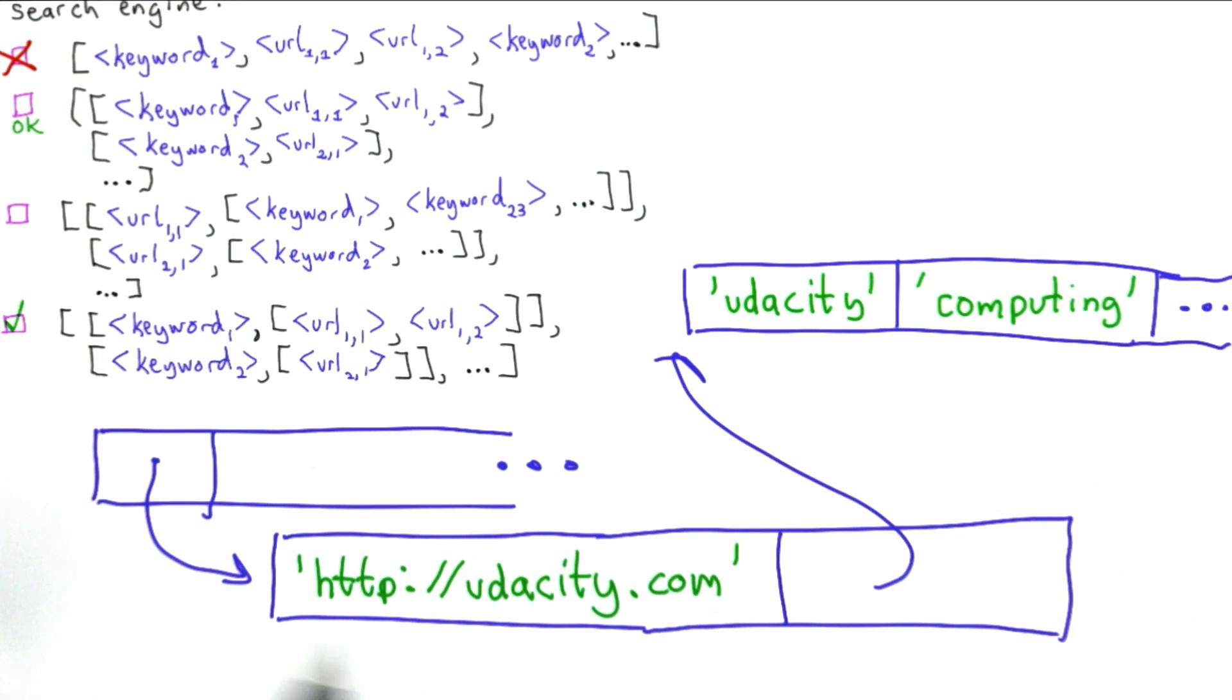If it does, well then we want this URL in our result. If it doesn't, then that URL is not in the result. But to find particular keywords, we've got to look through each entry, look through all of the keywords in that entry.